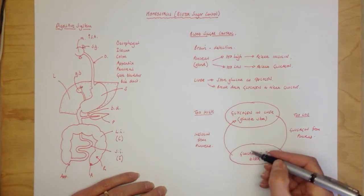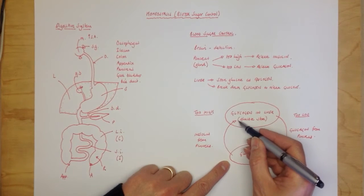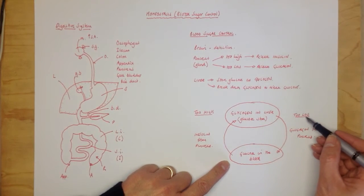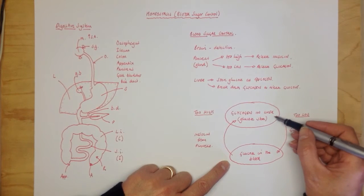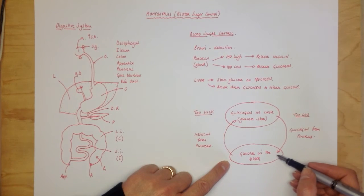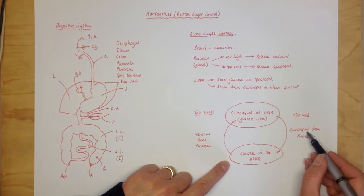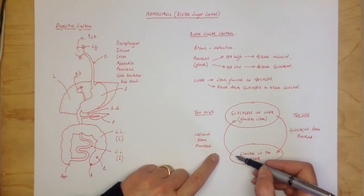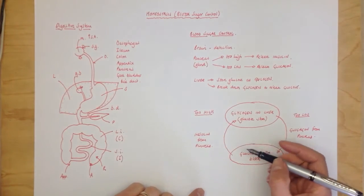So the blood sugar levels are too high, glucose is taken out of the blood and stored in the liver as glycogen. If the blood sugar levels are too low, glycogen is broken down and glucose is put back into the blood. Glucagon tells the liver to do that. Insulin tells the liver to do that.